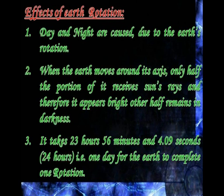Day and night are caused due to the earth's rotation. When the earth moves around its axis, only half the portion of it receives sun rays and therefore appears bright, while the other half remains in darkness. It takes 23 hours, 56 minutes, and 4.9 seconds — that is, one day — for the earth to complete one rotation.